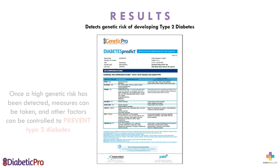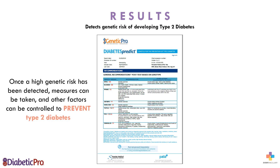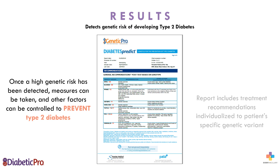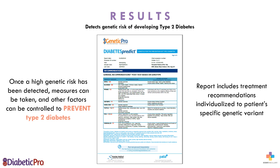Once a high-risk genetic test result has been detected, measures can be taken and other factors can be controlled to prevent type 2 diabetes. The report will include treatment recommendations, specific diet and lifestyle modifications, individualized by the patient's specific genetic variant.